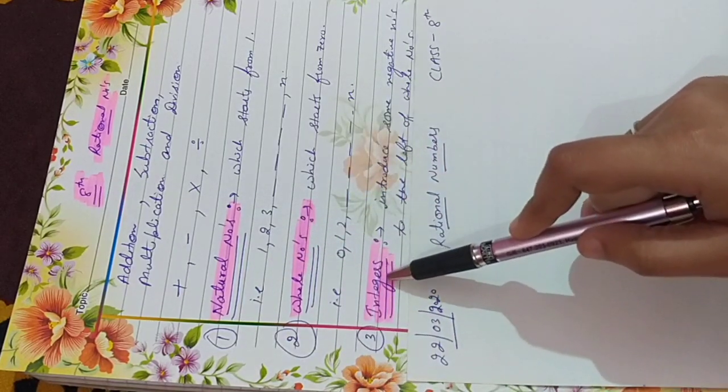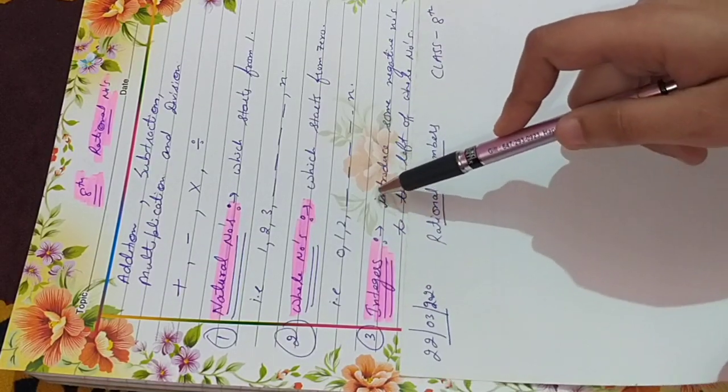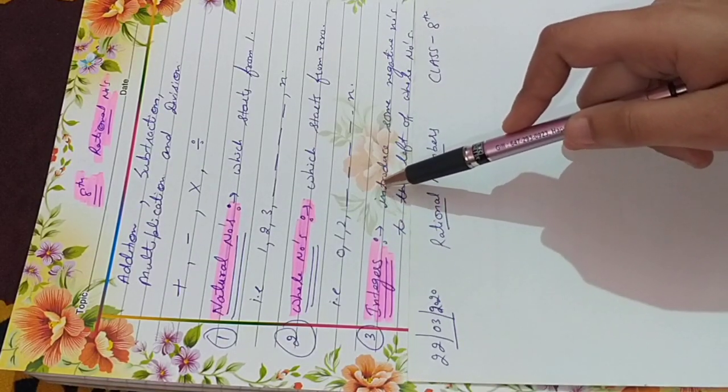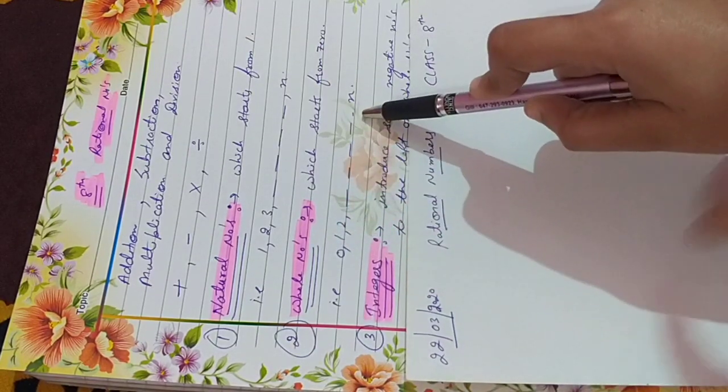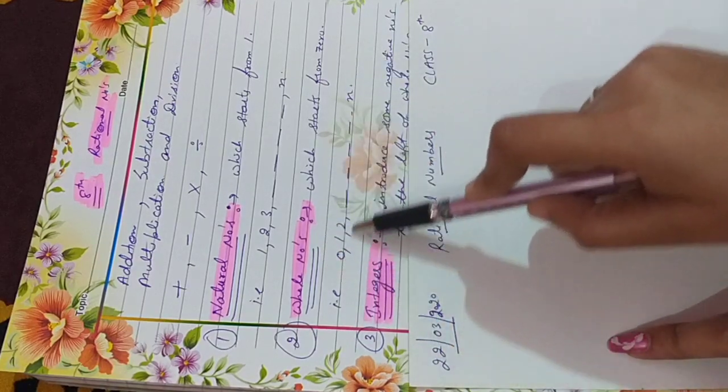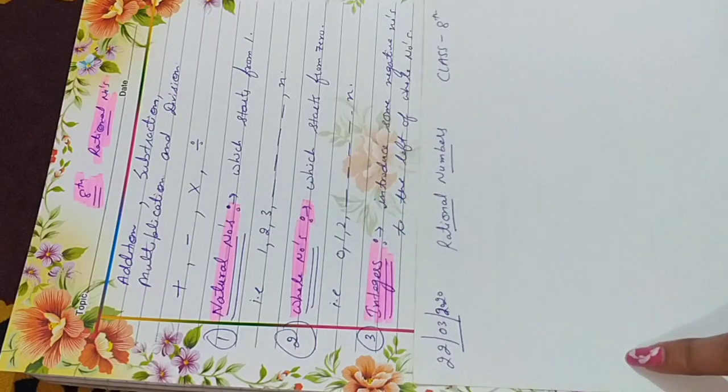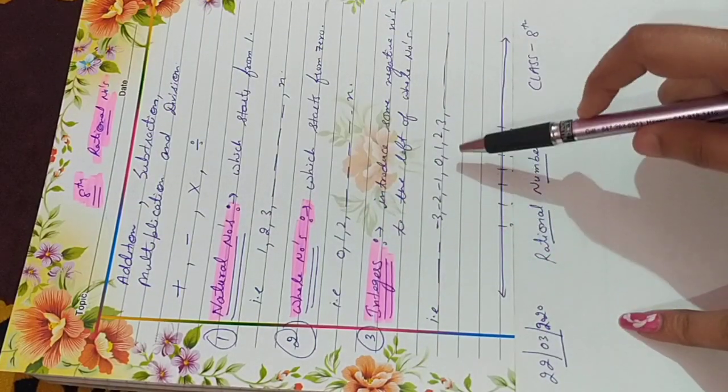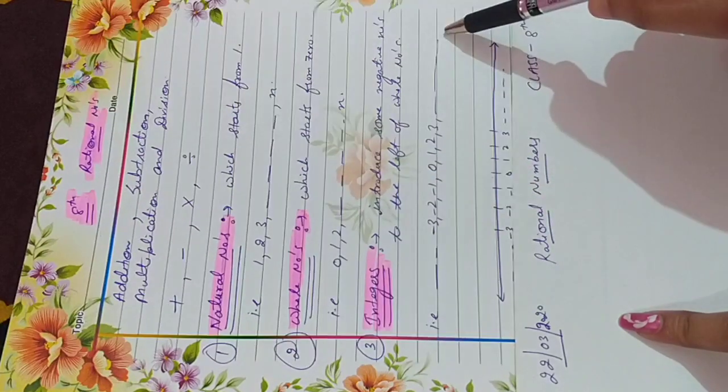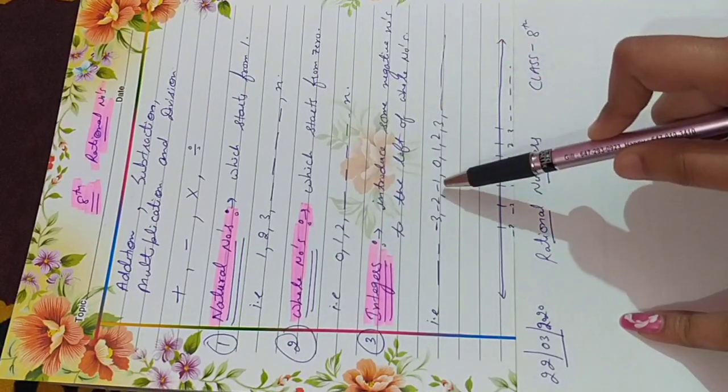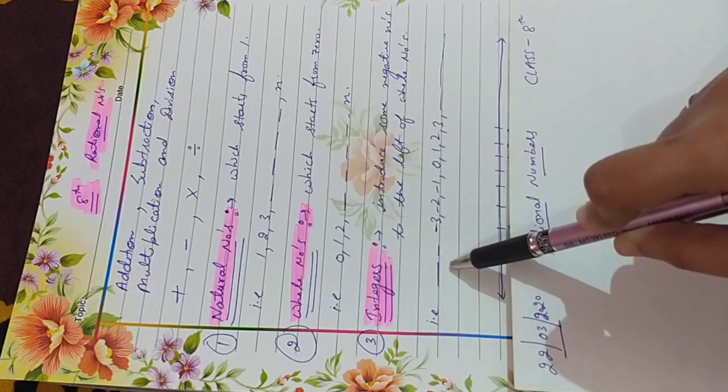Our next type is integers. In integers, there are some negative numbers also. That means if we add some negative numbers in whole numbers, it will become family of integers like 0 to infinity is whole numbers. And if we add minus 1, minus 2, minus 3, then it will become integers.